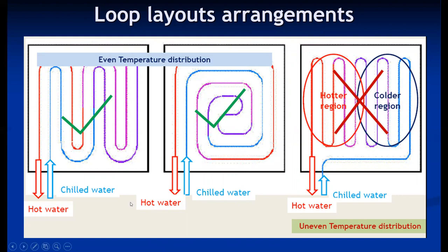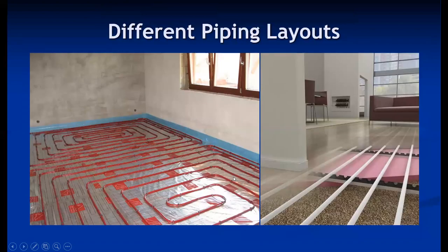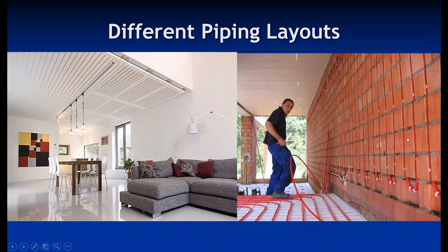These are the recommended loop layouts, which give uniform temperature everywhere. Inlet at one side and outlet at the other in a simple configuration creates hotter and colder regions, which is not recommended. Whatever layout is used, the loop should provide uniform temperature distribution. Both recommended configurations provide uniform distribution of temperature. Different layouts can be used in practice — radiant piping can be installed on the side wall, ceiling, or flooring.